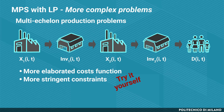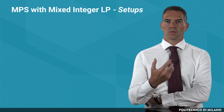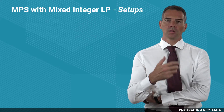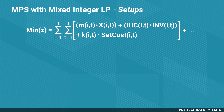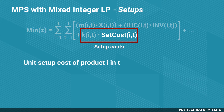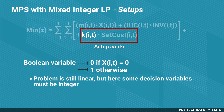The most important extension is going to more complex problems by using discrete decisions. Consider a problem in which setup times or setup costs affect the manufacturing decision — that is, any time a product is put into production in a given period, a given cost has to be paid. In this case, the objective function is modified by introducing a setup cost: the product of a unit setup cost for product i in time t, times a boolean variable k, which is 0 if no production is occurring or 1 if production is occurring. The problem is still linear, but some decision variables have to be integer, switching to mixed integer linear programming (MILP).